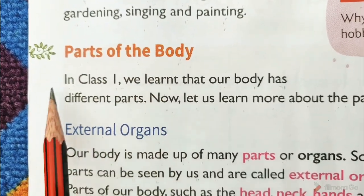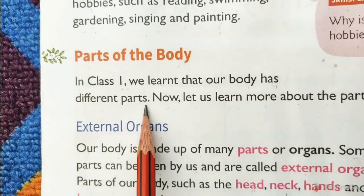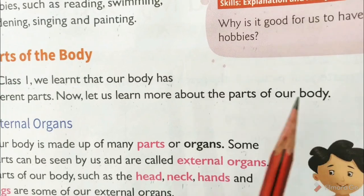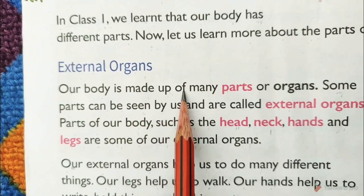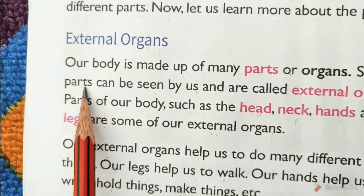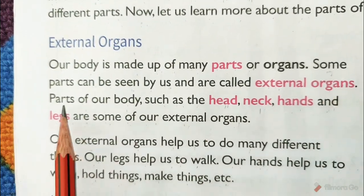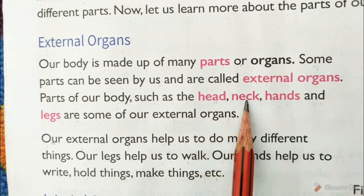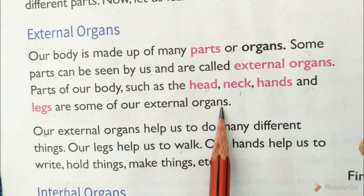Parts of the body. In class 1 we learnt that our body has different parts. Now let us learn more about the parts of our body. External organs: our body is made up of many parts or organs. Some parts can be seen by us and are called external organs. Parts of our body such as the head, neck, hands and legs are some of our external organs.